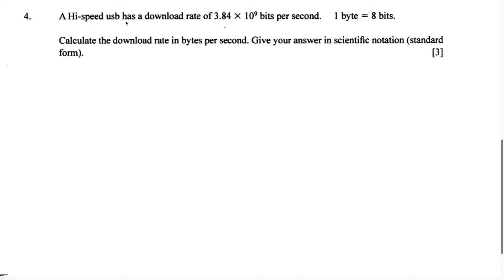A high-speed USB has a download rate of 3.84 times 10 to the 9th power bits per second. They give us the conversion rate of 1 byte equals 8 bits. Calculate the download rate in bytes per second and give your answer in scientific notation, standard form.